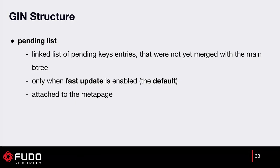The pending list itself is attached to the meta page and is a linked list of pending key entries that were not yet merged with the main B-tree. This is a performance optimization to allow for faster inserts. It is only present if the fast update option is enabled — and it is enabled by default — so that's why it's important.